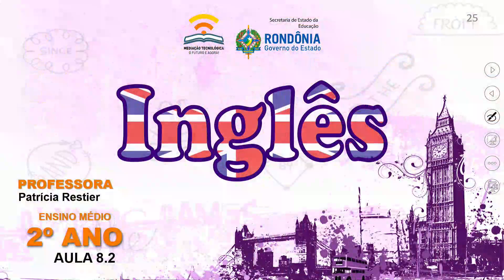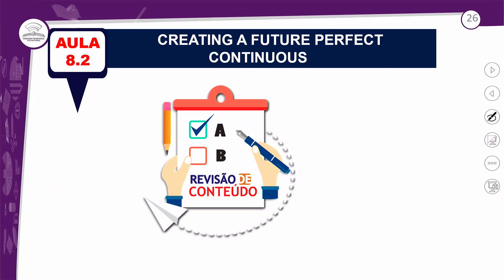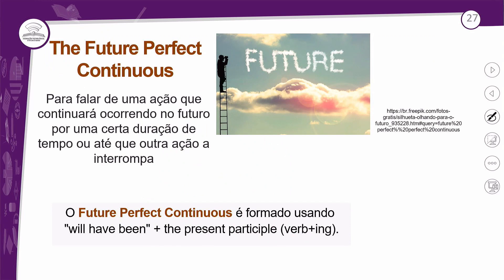Let's go! Aula 8.2, temos o creating a future perfect continuous — criando o futuro perfeito contínuo progressivo. Vamos relembrar qual é o uso desse futuro perfeito contínuo. Basicamente, você vai usar o futuro perfeito contínuo em duas situações: para falar de uma ação que continuará ocorrendo no futuro por uma certa duração de tempo ou até que outra ação a interrompa. Isso é basicamente o uso dele.